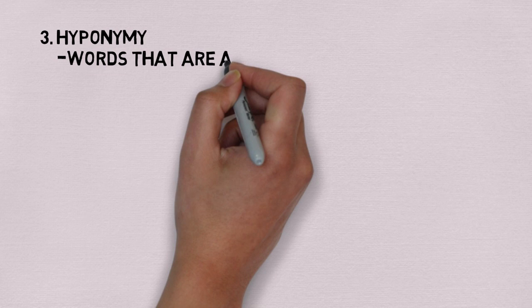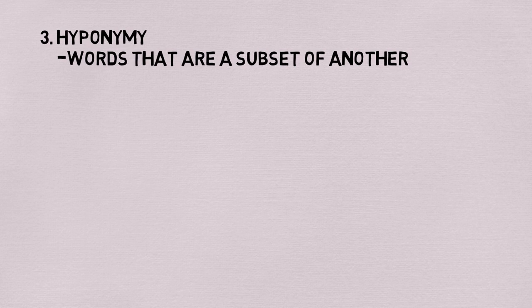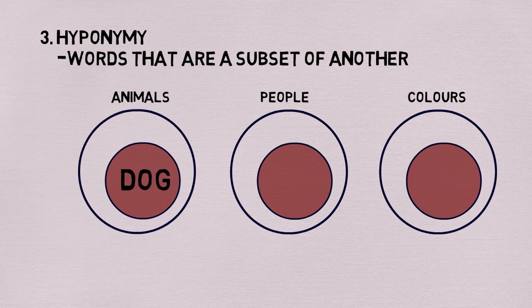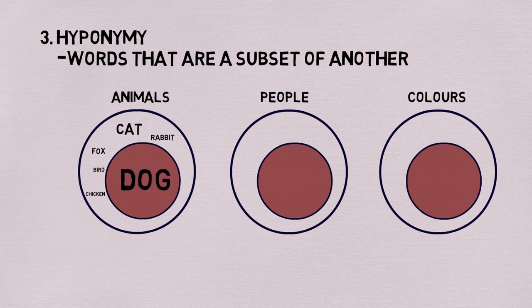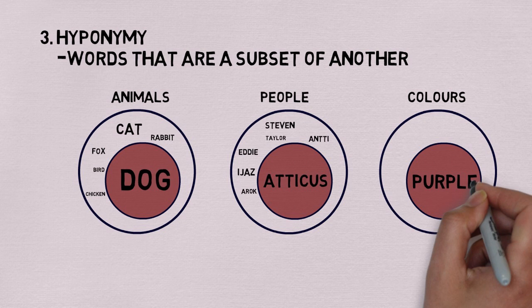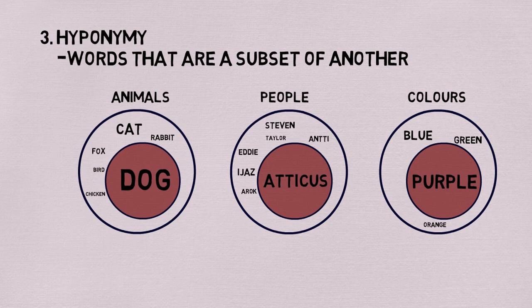The third type of lexical relation is that of hyponymy. Hyponymy describes the relationship that occurs when one word is a subset or a part of another word. You can think of this in the frame of an 'x is a y' relationship. A dog is a hyponym of animal — we can say 'a dog is an animal.' Atticus is a hyponym of people — we can say 'Atticus is a person.' Purple is a hyponym of color because we can say 'purple is a color.' Hyponymy is the relationship that occurs when one word is an instantiation of the full set of another word.